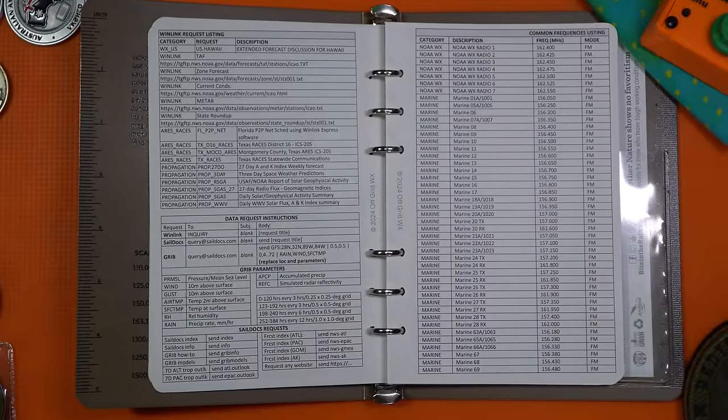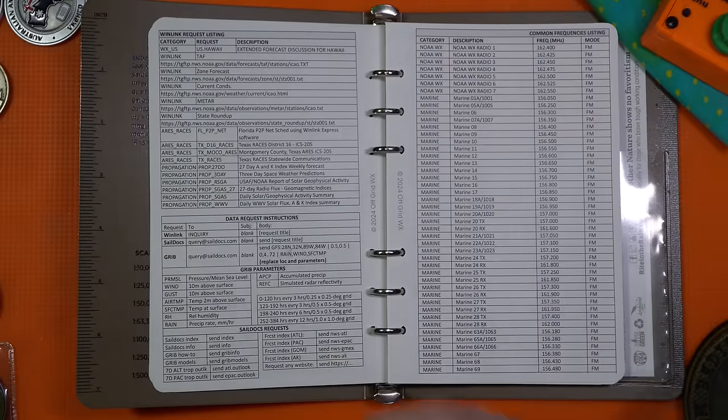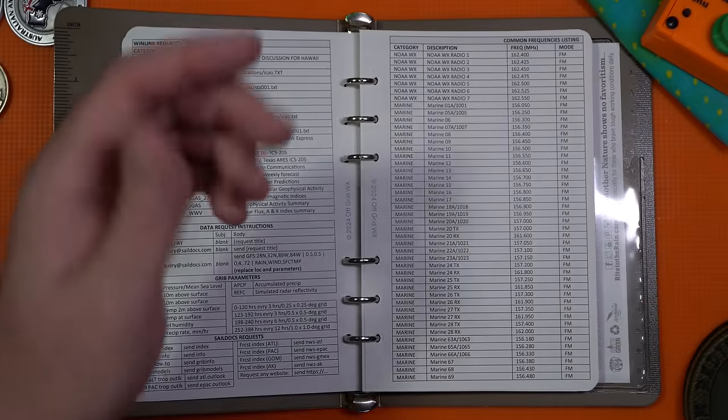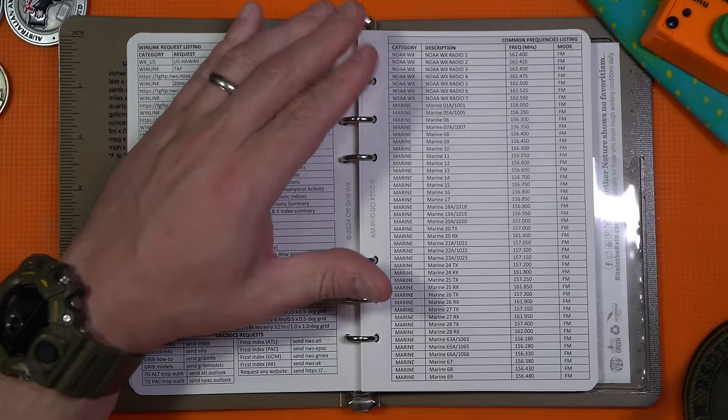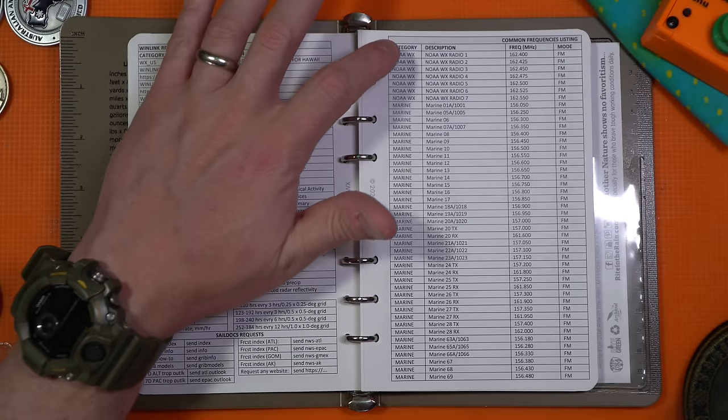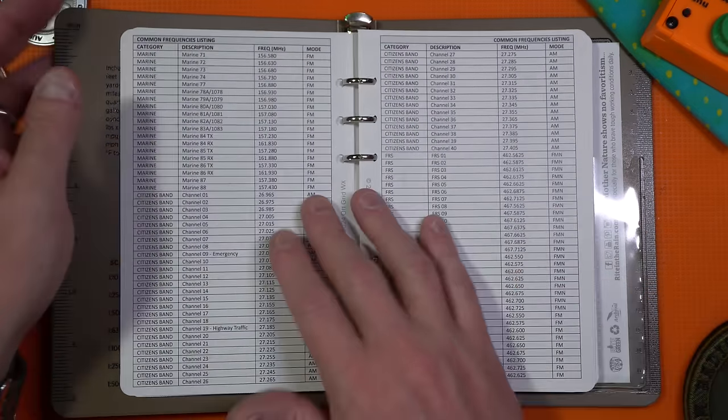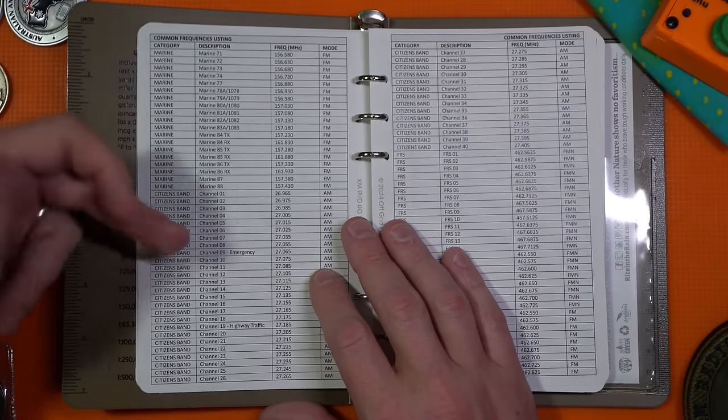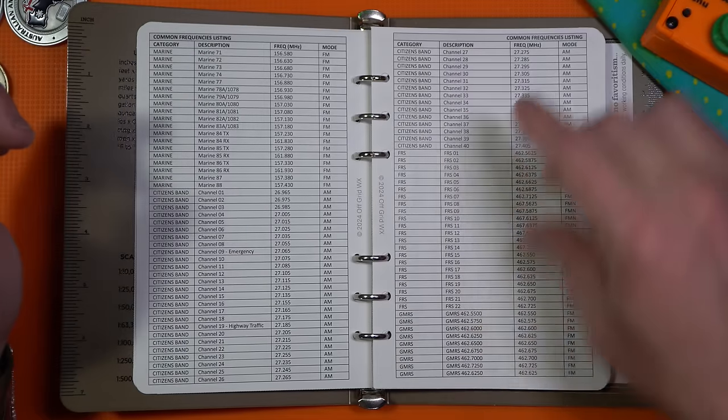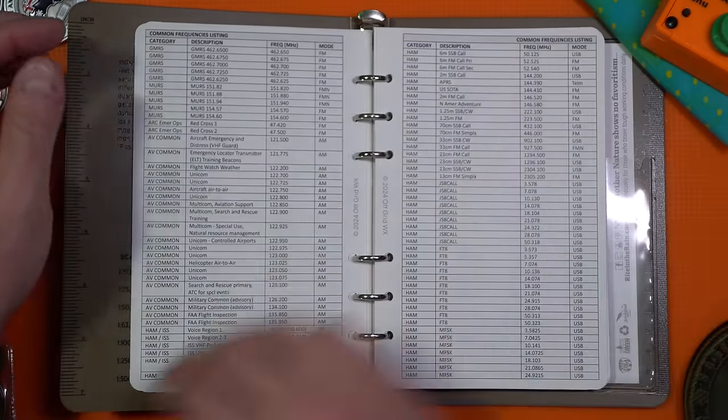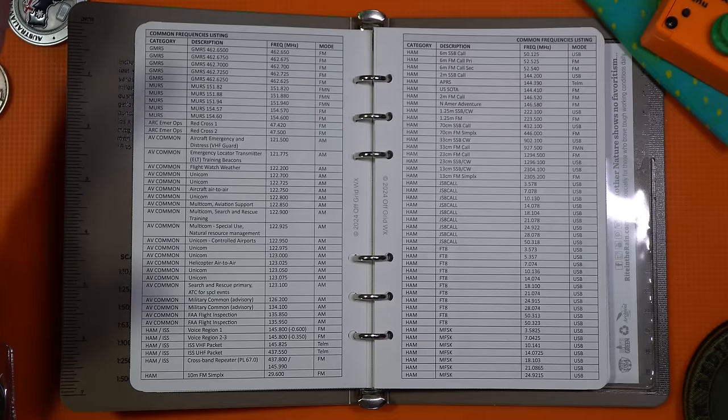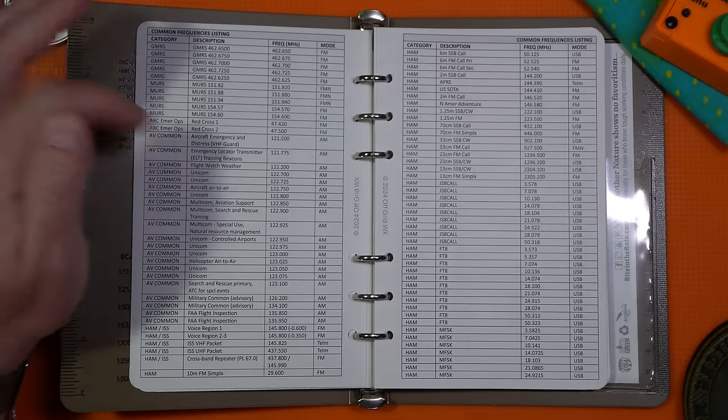So for those of you that are like, well, I don't have a wind link station set up, so why should I care about that? That's where things kind of start getting interesting for you landlubbers that are not sail based or wind link based. This is where it starts breaking down frequencies that you might most commonly use. So all the weather stations for NOAA, all of the marine channels are listed, marine citizens band. So CB, FRS, GMRS, and yeah, they're pretty much the same, but you know what I mean here.